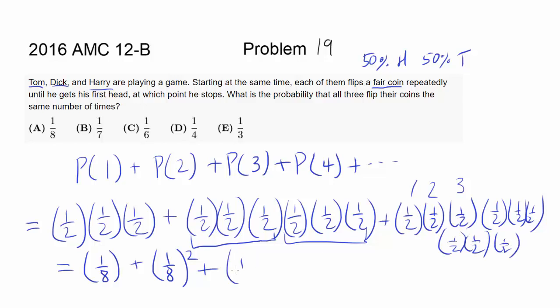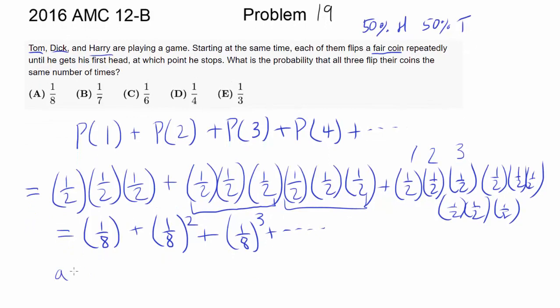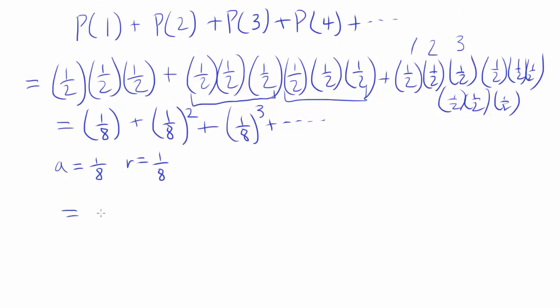So you have 1/8 cubed and you have infinite geometric sum with first term being 1/8 and the common ratio being 1/8. And what's the infinite geometric sum? A over 1 minus R when absolute value of R is less than 1, in which case the series converges.